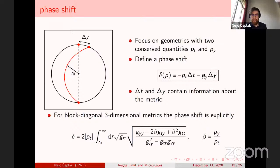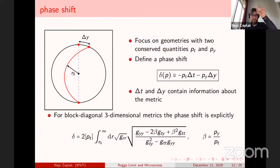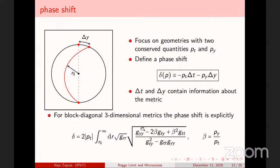Let r₀ be the turning point of the null geodesic. Let Δy and Δt be the differences in where the null geodesic comes out compared to pure AdS. For geometries with two conserved quantities — conserved energy and conserved angular momentum — we define the bulk phase shift as the product of the energy and the time shift, plus the angular momentum and the angular deviation. The quantities p_t and p_y are the same for pure AdS and the deformed geometry, but Δt and Δy contain nontrivial information about the metric.